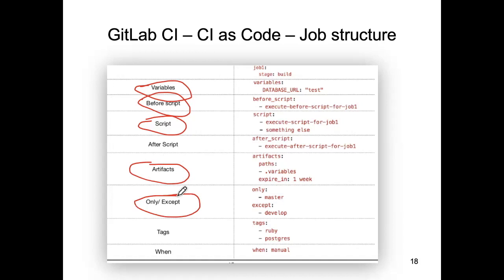Sometimes you only want a job to be executed if the commit made to the repo was to a particular branch — you'll see examples of that in the accompanying lab. There are also tags, but I don't really use those. It's all a bit abstract until you start practicing, and you will get a chance to practice it when we eventually do the lab associated with this set of slides.